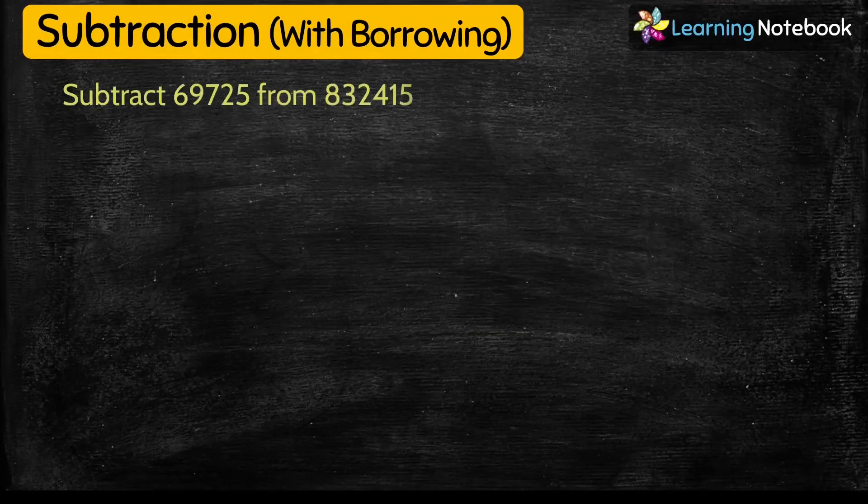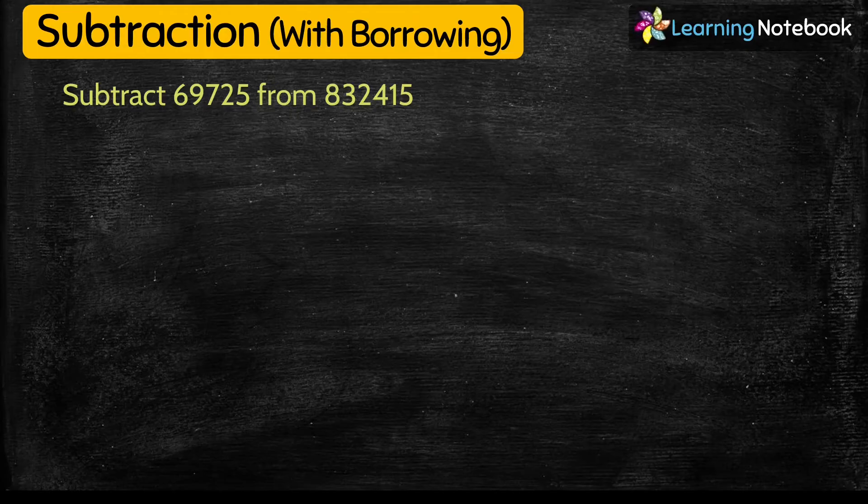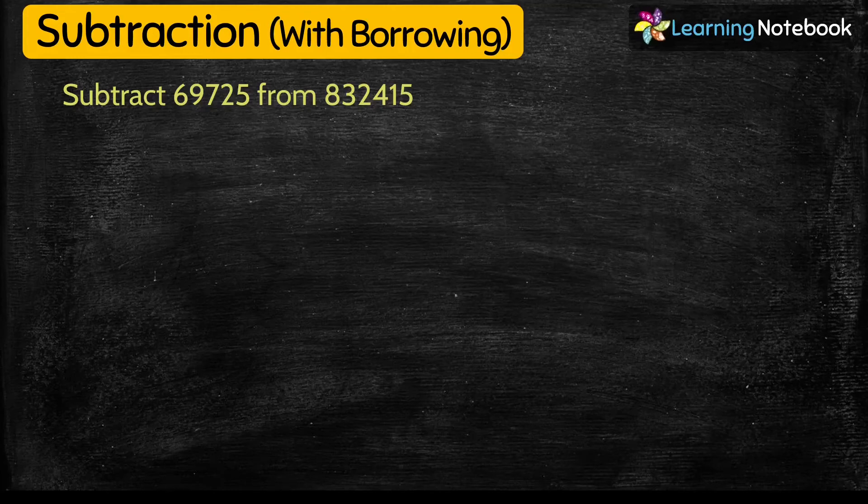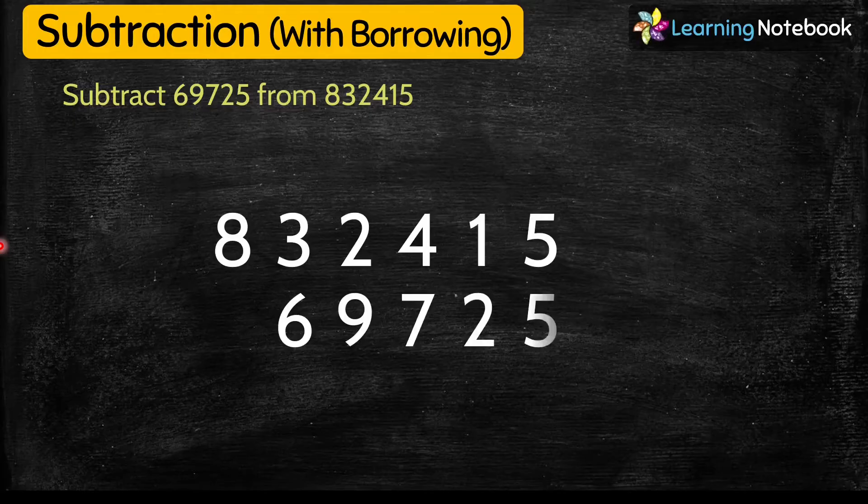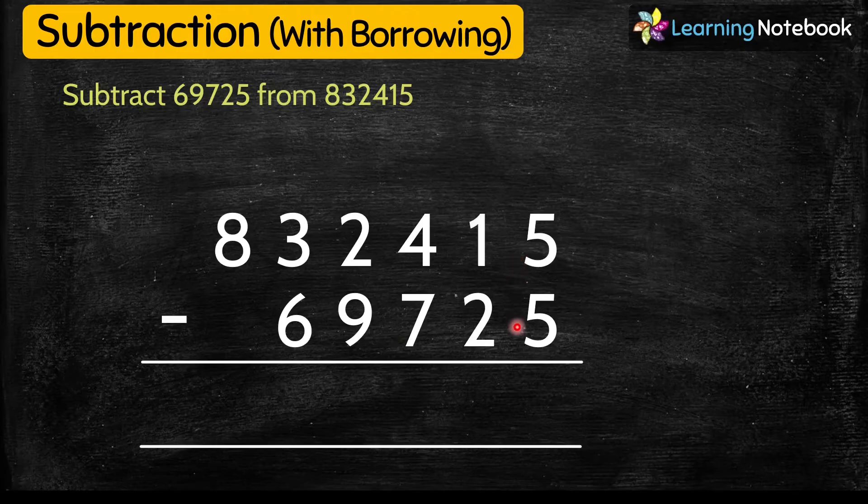Let's do the next question. Subtract 69,725 from 832,415. So let's write these numbers in columns and then we will start subtracting them from one's place. 5 minus 5 equals 0.